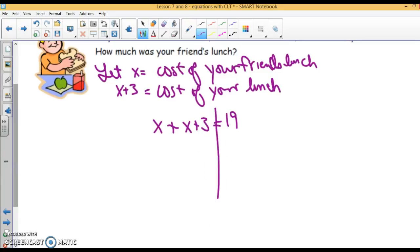To solve this, let's simplify on one side. x plus x is 2x plus 3 equals 19. I've got to bring down the plus 3. To solve, subtract 3 from both sides. So 2x is 16 divided by 2. x is 8.